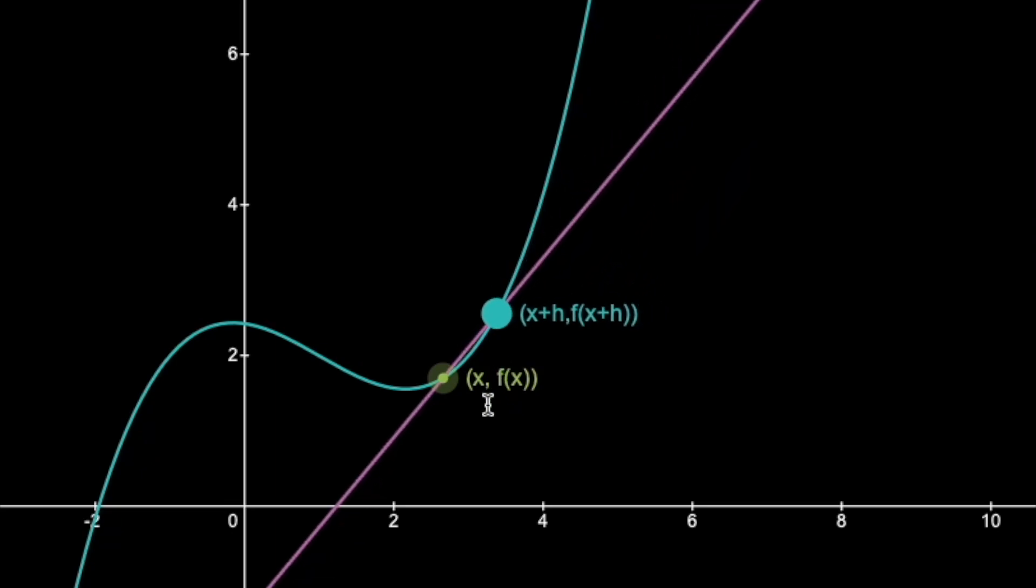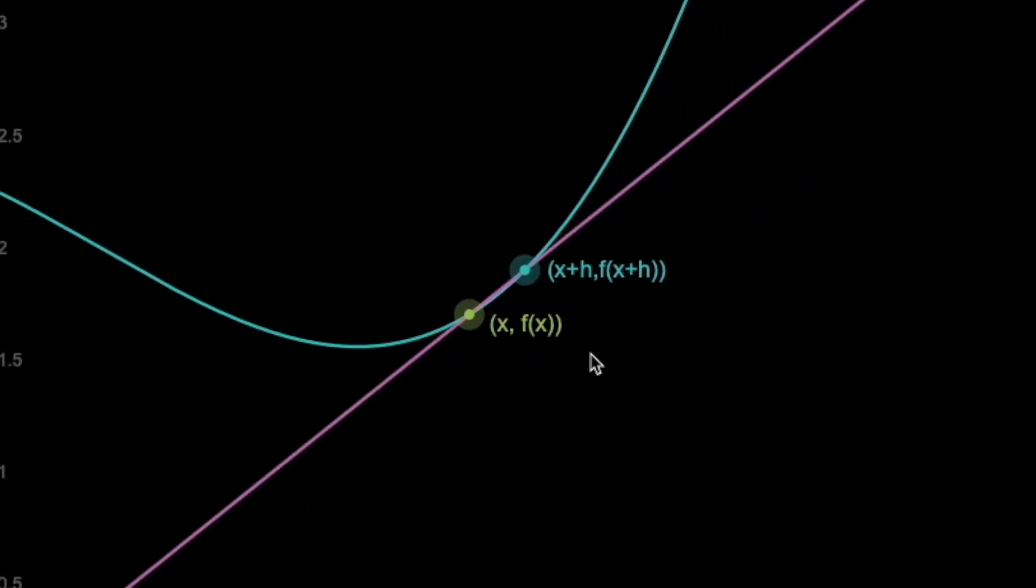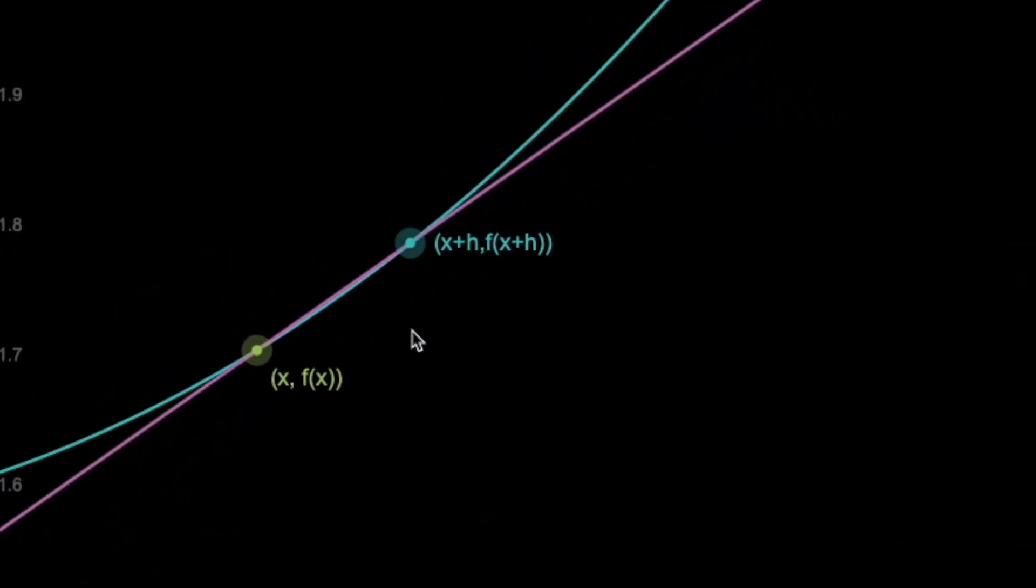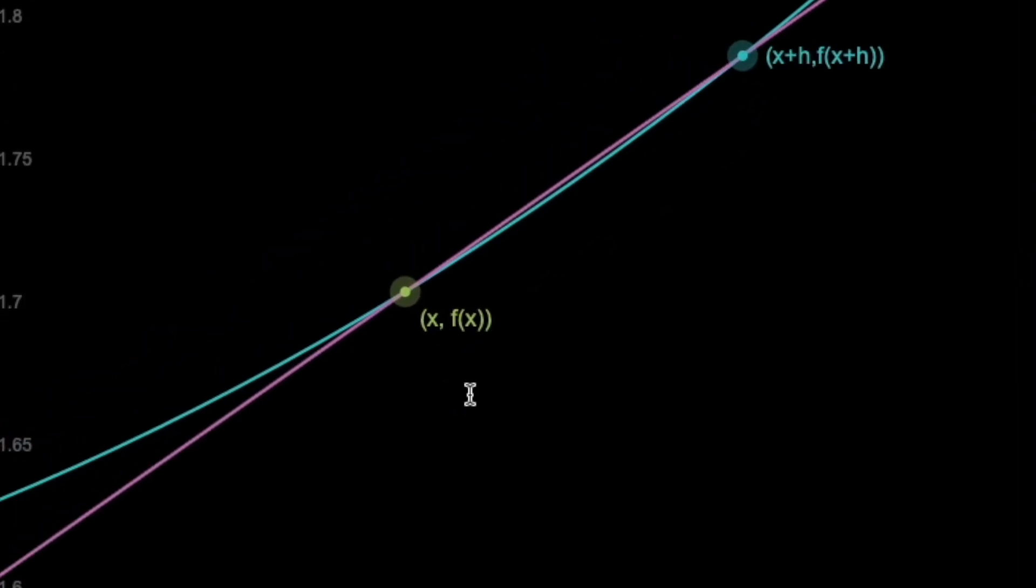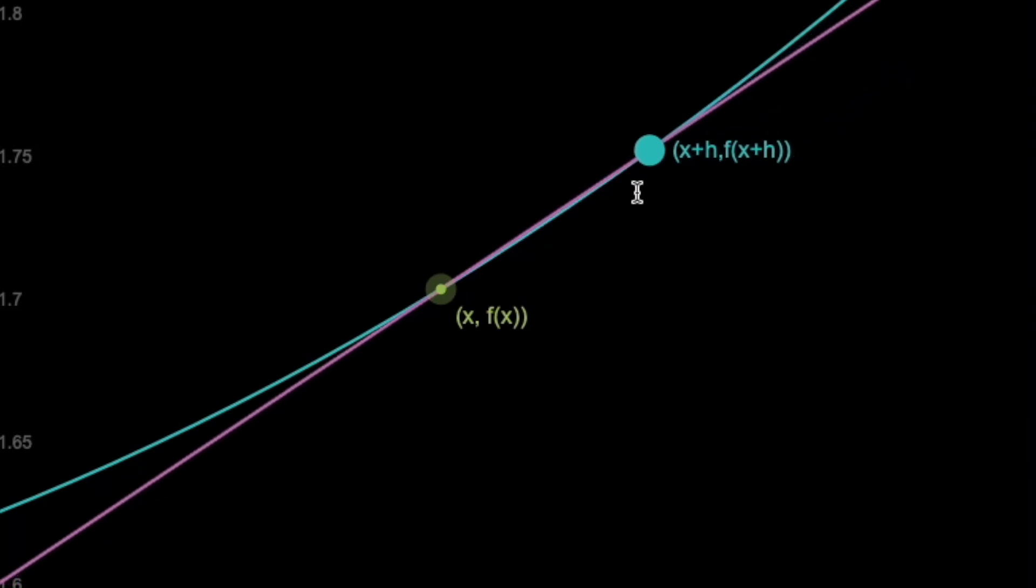Not good enough. Closer. Closer. In other words, we want this distance h to approach 0. So we take the limit of this slope as h approaches 0.